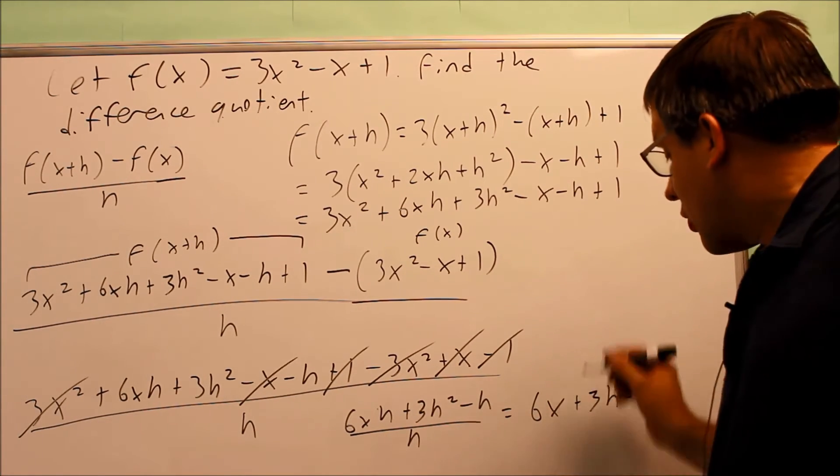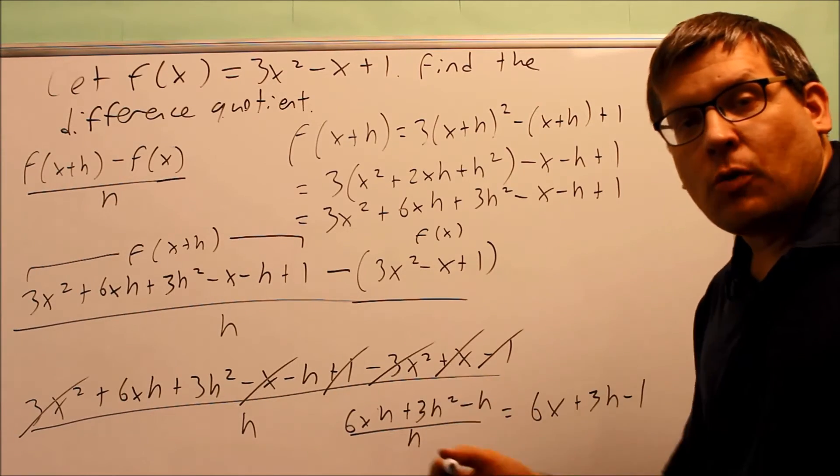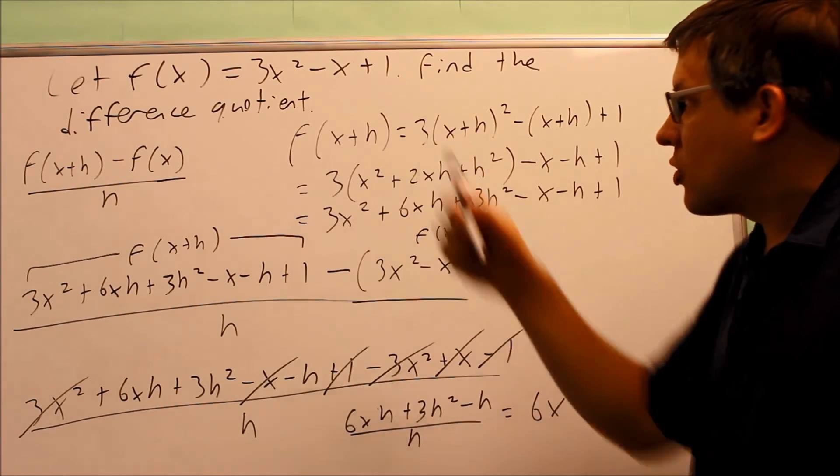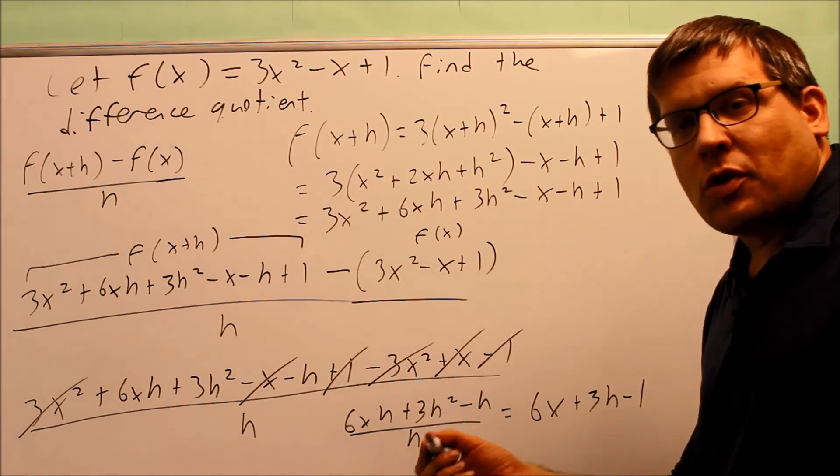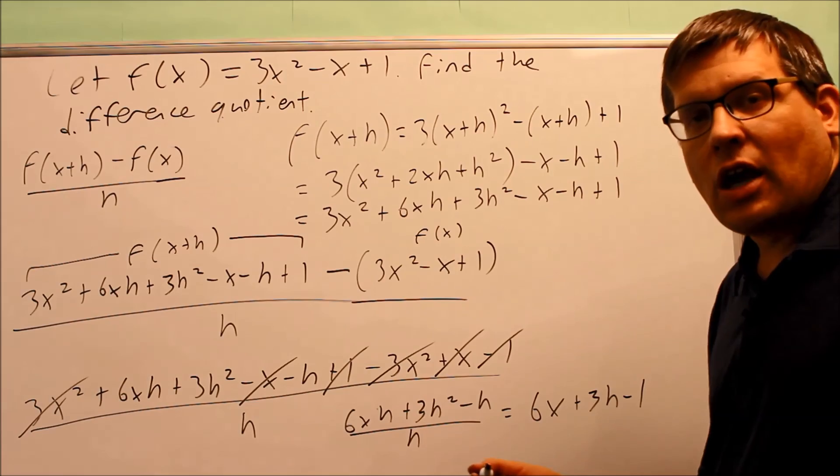That's an expression that you can use to find a slope at any point along this curved line. So in a way, the answer we got, it's slope. So whenever you do difference quotient, it's the same thing as slope.